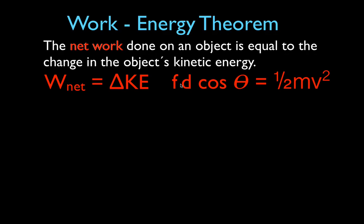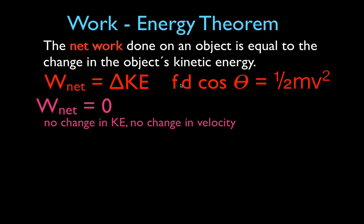There are three kinds of net work: positive, zero, and negative. If the net work is zero, that means there's no change in kinetic energy — the object is not speeding up or slowing down, there's no change in velocity. It could be moving at a constant velocity or standing still. If the net work is positive, the kinetic energy is increasing, meaning the net force is in the direction of motion.